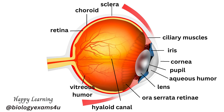Vitreous humor, also called vitreous fluid, is a clear gel-like substance located in your eye. It takes up the space between your eye's lens and retina, and helps your eye keep its shape. The fovea centralis is a small central pit composed of closely packed cones in the eye. The fovea is responsible for sharp central vision, also called foveal vision, necessary for activities where visual detail is of primary importance, such as reading and driving.